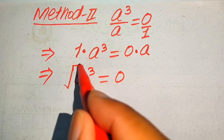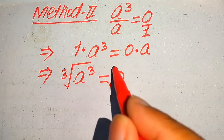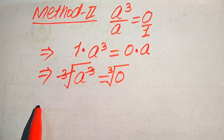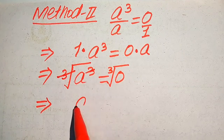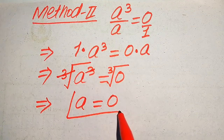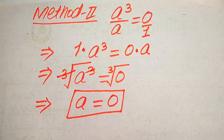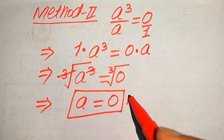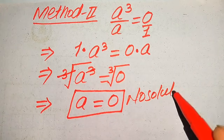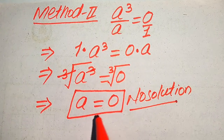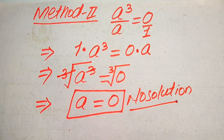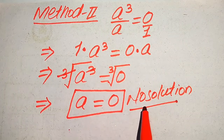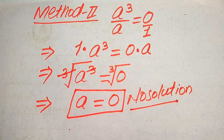To remove the cube sign we take the cube root on both sides. The cube and cube root cancel, giving us a equals 0. This is the same value of a obtained in the first method. As we know, a equals 0 does not satisfy the given equation, so a equals 0 is the extraneous root and this question has no solution. Thank you for watching — please subscribe for more videos.